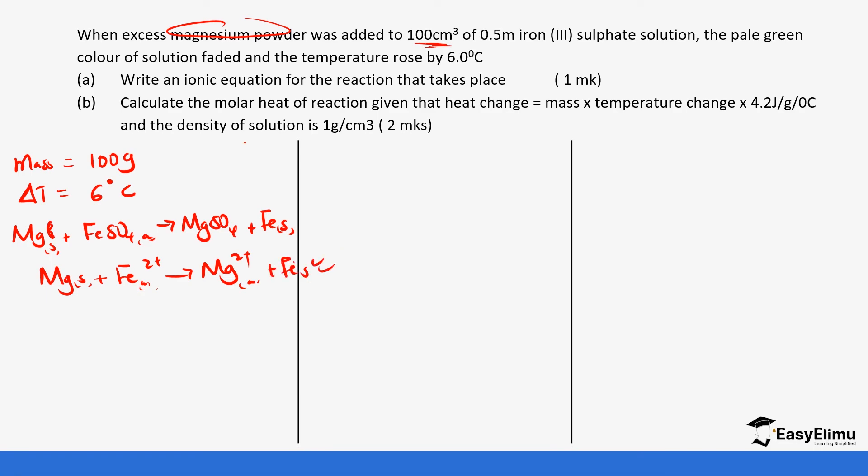Then calculate the molar heat of reaction given that the specific heat change is 4.2. You can see now this is in joules and grams. So our calculation will be heat change is going to be the specific heat capacity times mass of solution times temperature change. So the specific heat capacity is 4.2 and remember it's joules per gram. So our mass will remain as it is times the mass which is 100 grams times temperature change which is 6, which gives us 2,520 joules.